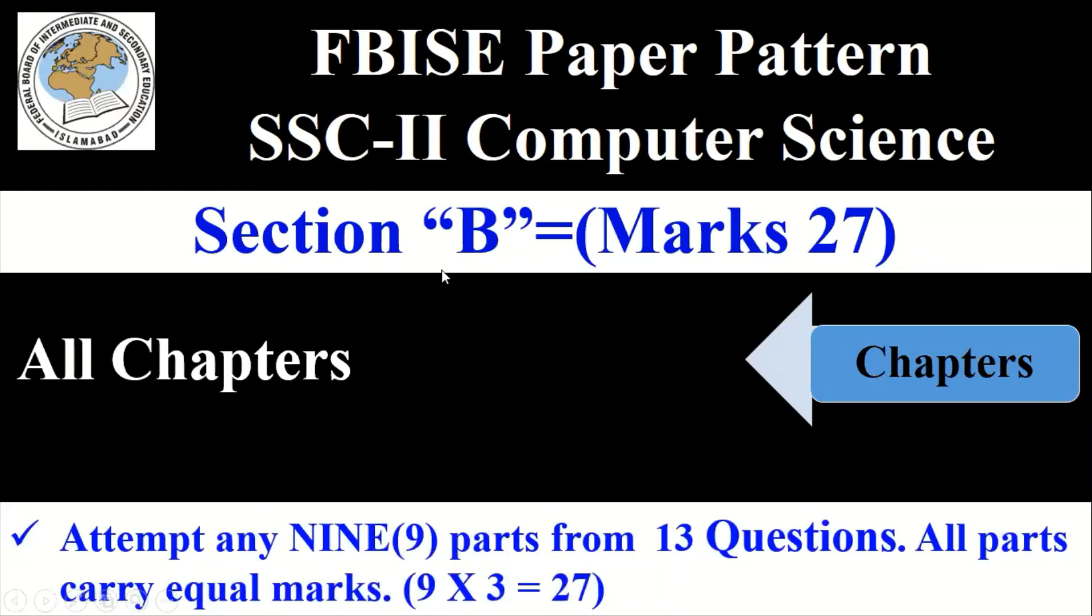You have to attempt nine questions or nine parts from 13 questions given, and all parts carry equal marks. In Section B you have to attempt nine questions from the 13 given and each question has three marks, so that means you will have 27 marks: 9 x 3 = 27.